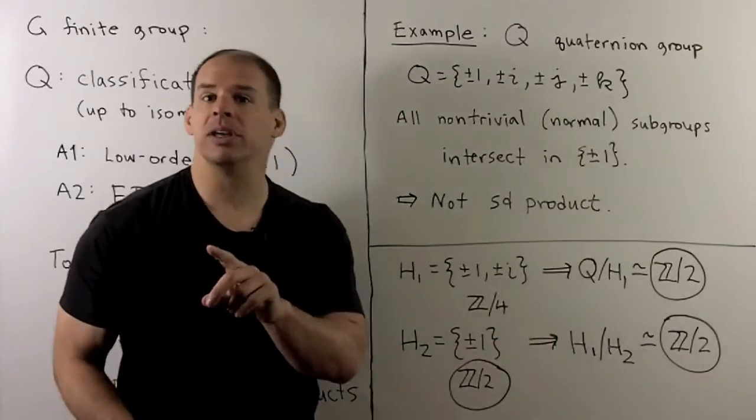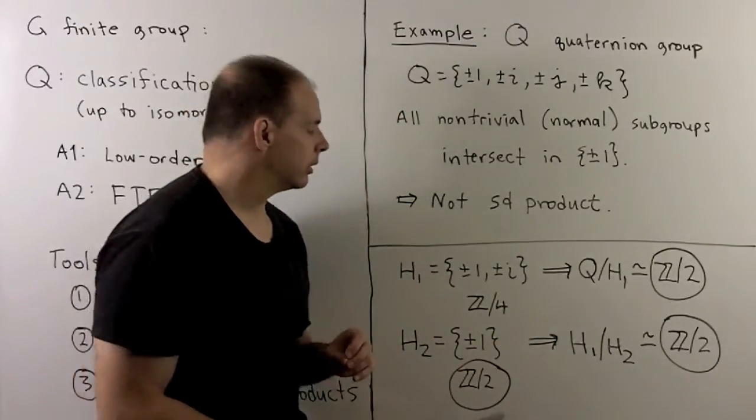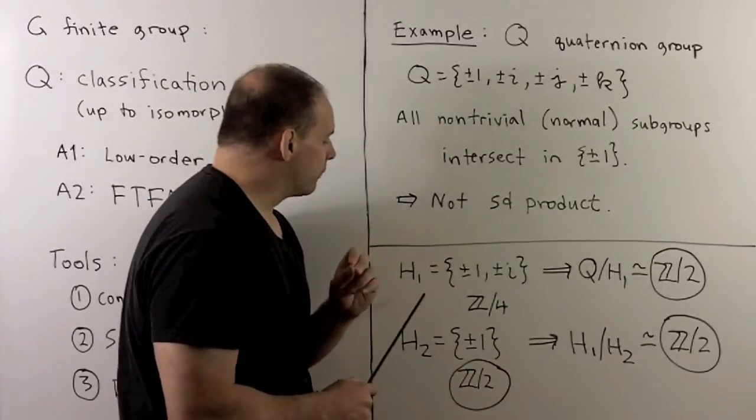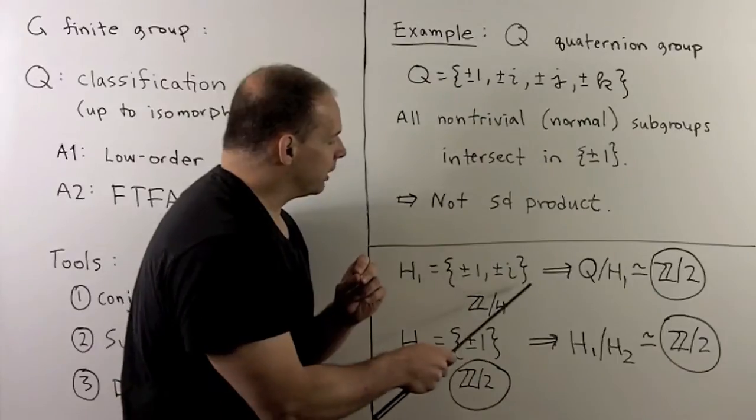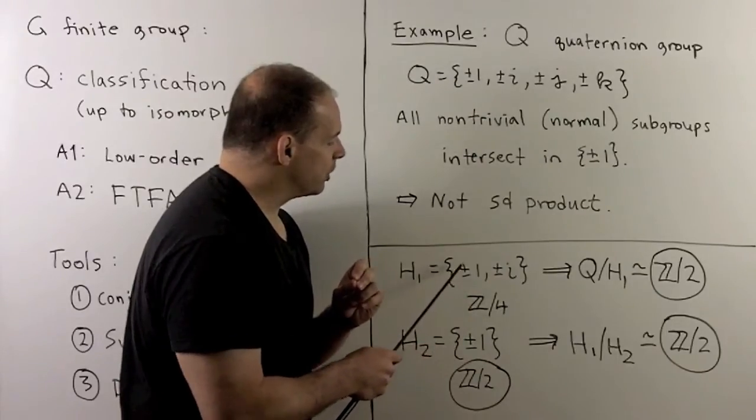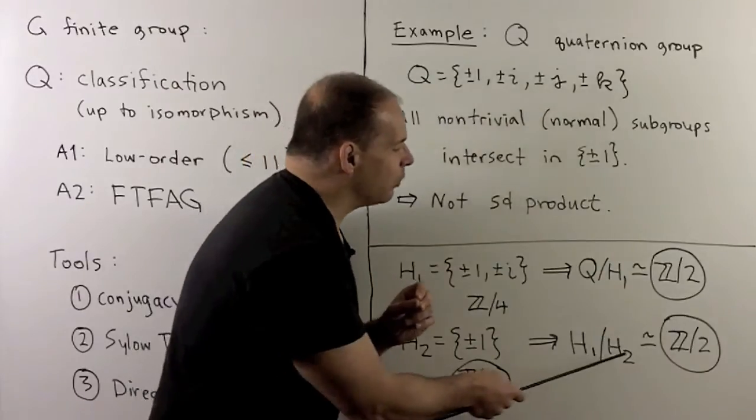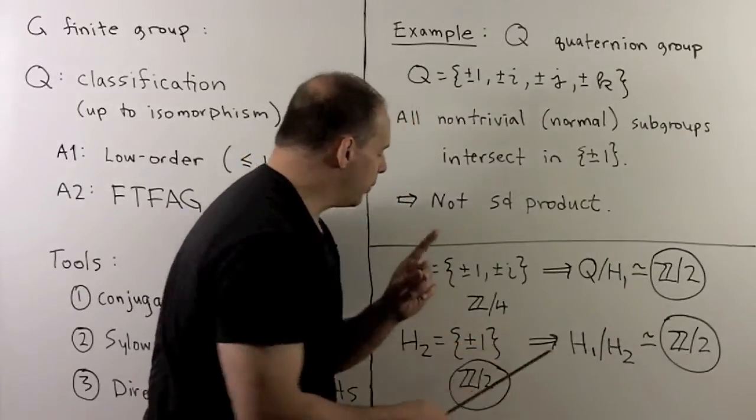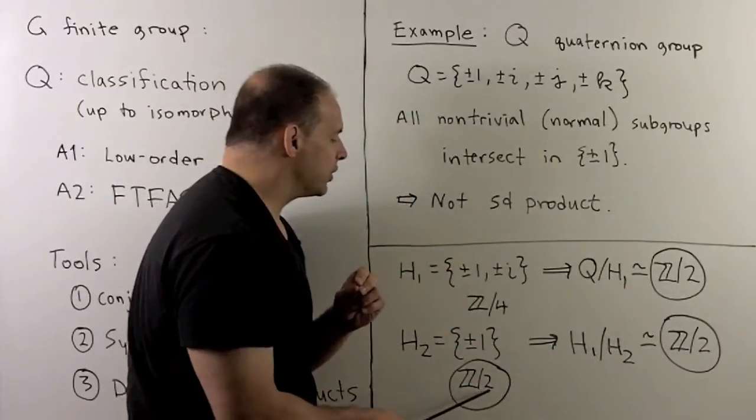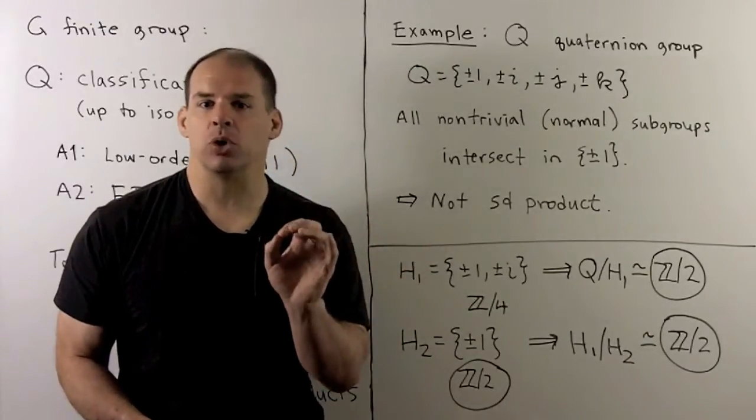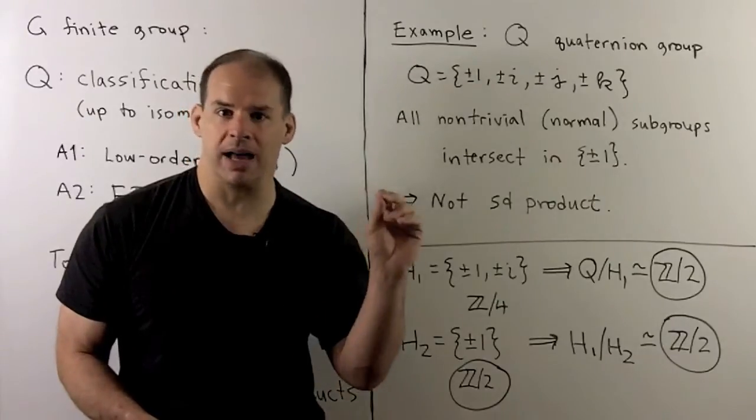Z mod two is a simple group. I repeat this procedure with H1. So, I'm going to look for largest normal subgroup in here. I can use plus minus one. I form the quotient group. Again, we get a Z mod two. And we note that H2 itself is a Z mod two. So the end result of this procedure is going to be three simple groups, all isomorphic to Z mod two.